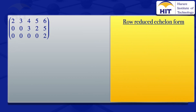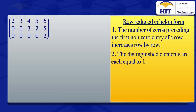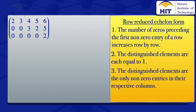For a matrix to be in row reduced echelon form, it has to satisfy the following three conditions. Number 1, the number of zeros preceding the first non-zero entry of a row increases row by row. Number 2, the distinguished elements are each equal to 1. And number 3, the distinguished elements are the only non-zero entries in their respective columns. Looking at the matrix, the leading elements are the 2, the 3, and the 2 — those are the distinguished elements.